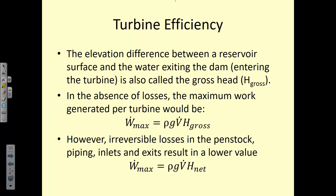The elevation difference between a reservoir surface and the water exiting the dam as it enters the turbine is called the gross head — the total distance from the top of the reservoir to the turbine entrance. If there are no losses, the maximum work that can be generated is equal to the gross head multiplied by the flow rate, density, and gravity. You're imagining starting at zero velocity at the top of the reservoir, and all that energy is converted to kinetic energy at the turbine.